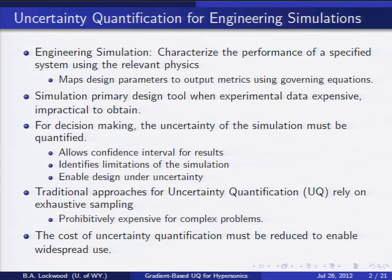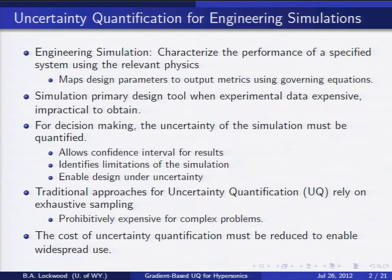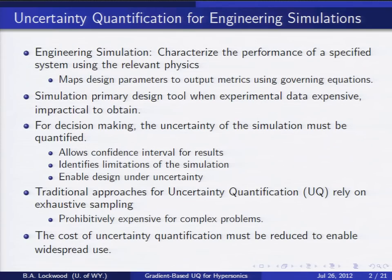I want to distinguish engineering simulation from scientific simulation, where your goal is to figure out what's going on. For an engineering simulation, we know roughly what's going on — we just need to come up with an actual number. Engineering simulation is incredibly important as a design tool when experimental data is really expensive and impractical to obtain. If you are designing a new atmospheric reentry vehicle, a new reactor, or a new plane, you can't afford to test every design experimentally, so you have to make decisions based on simulations. And when you're making decisions based solely on simulations, you have to account for the uncertainty of the simulation.